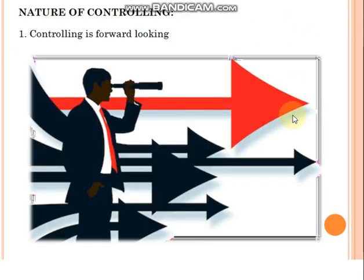What is the nature of controlling? Controlling is forward-looking because we don't know what will come — it is all about forecasting. Based on that, we have some notion of what to do, what should we do, and what should not be done. It's a forward-looking process.